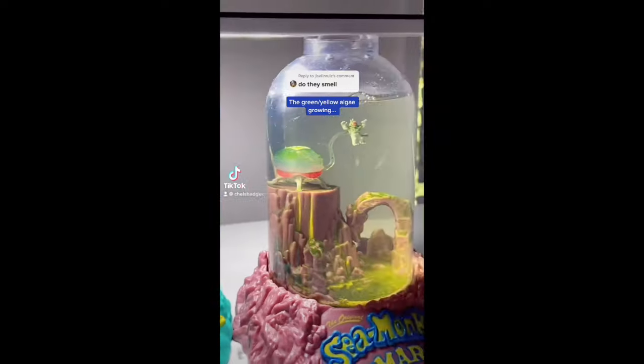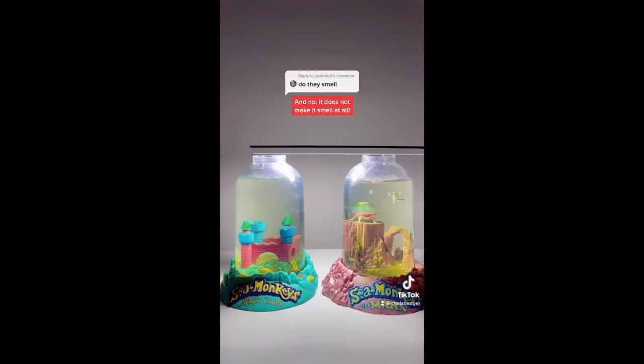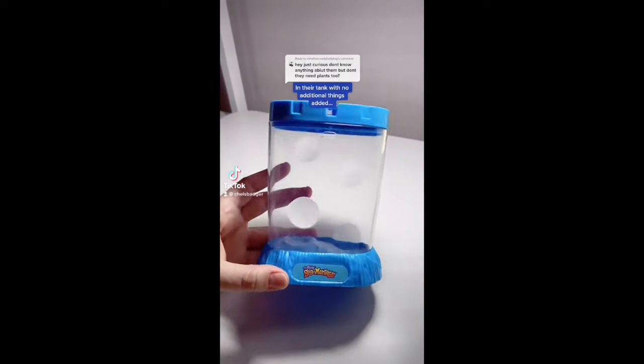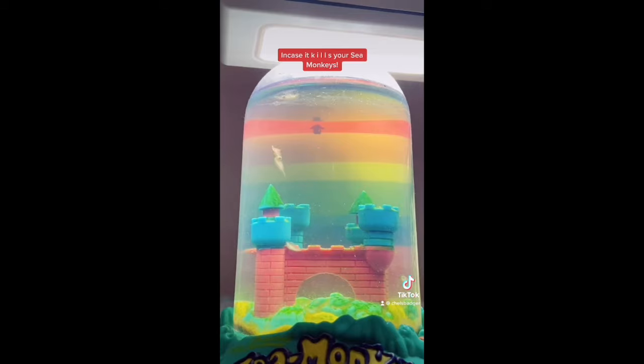The yellow-green algae growing in your sea monkey tank is your sea monkey's food and no it does not make it smell at all. Sea monkeys will live happily in their tank with no additional things added. They don't need plants and I personally wouldn't recommend adding them in case it kills your sea monkeys.